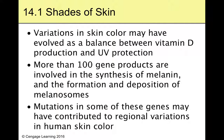There was a really strong correlation, and the idea is that these variations evolved over time as a balance between vitamin D production and UV protection. Lots of melanin gives you UV protection but reduces vitamin D production. Very little melanin means lots of vitamin D but little protection from sunlight. So depending on where you live, it's beneficial to be very dark or very light.